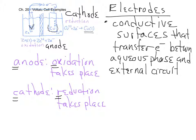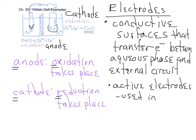The particular kinds of electrodes we used are going to be called active electrodes, and they're called active electrodes because they are used in the redox reaction. If you were to write the overall net ionic equation taking place in this electrochemical cell, it would involve the zinc metal and the copper metal — so those are examples of active electrodes.